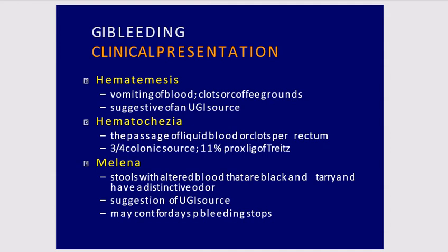Melena refers to stools with altered blood that are black and tarry and have a distinct odour, which is suggestive of an upper GI source. Melena may continue for several days until bleeding stops.